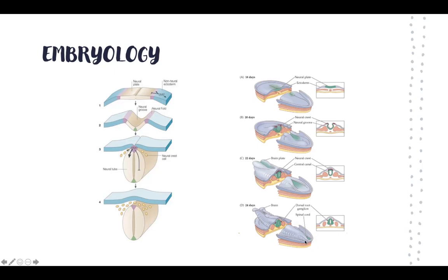Failure of the cranial end to fuse results in a condition called anencephaly, which is incompatible with life. Failure of closure of the caudal end results in spina bifida — some patients may have no symptoms at all, while others may have neurological deficits. On the side diagram, the notochord tells the neural plate to fold inwards, creating a neural fold, then forming the neural tube, and what used to be the neural crest breaks off into neural crest cells.